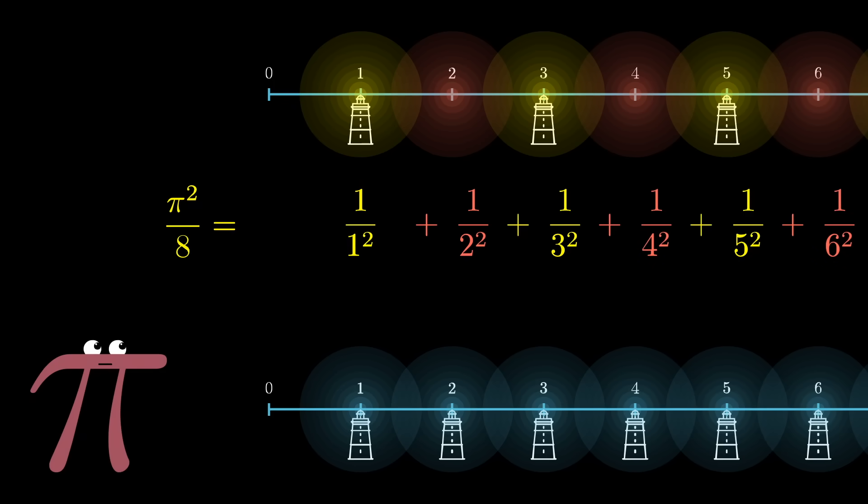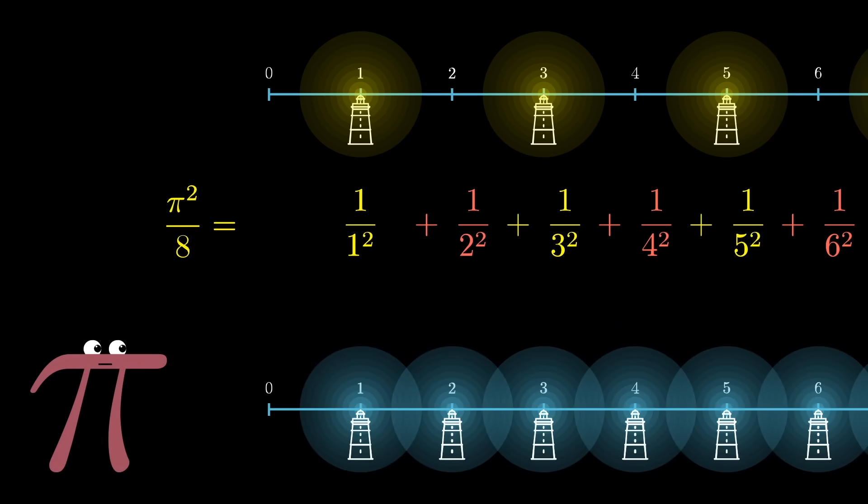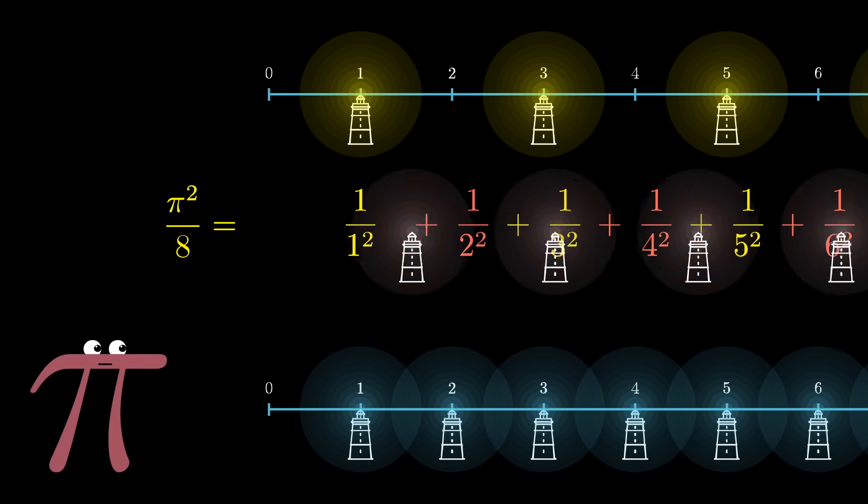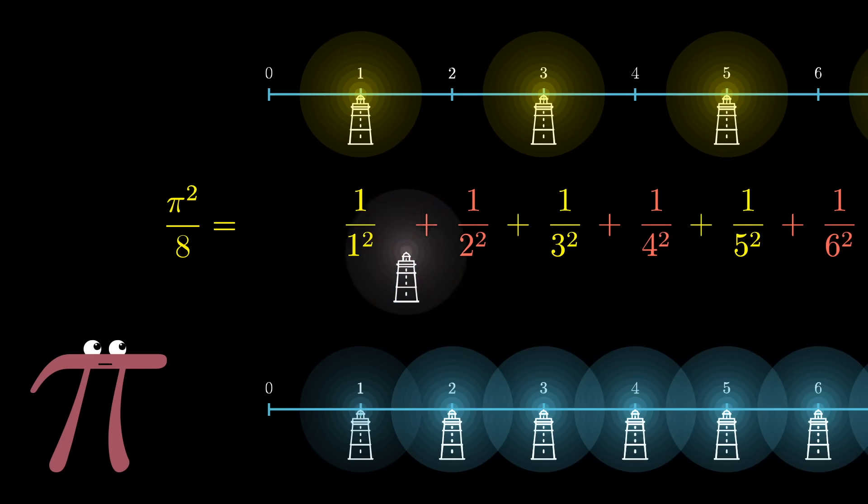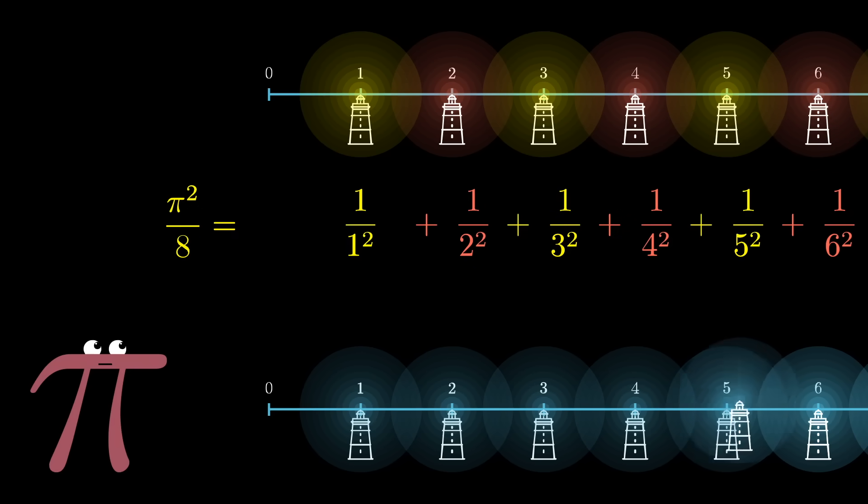Now you can think of that missing series as a scaled copy of the total series that we want, where each lighthouse moves to being twice as far away from the origin—1 gets shifted to 2, 2 gets shifted to 4, 3 gets shifted to 6, and so on. And because that involves doubling the distance for every lighthouse, it means that the apparent brightness would be decreased by a factor of 4.